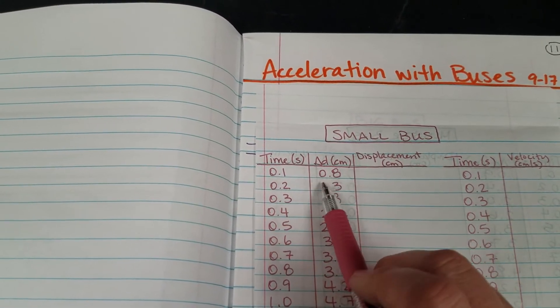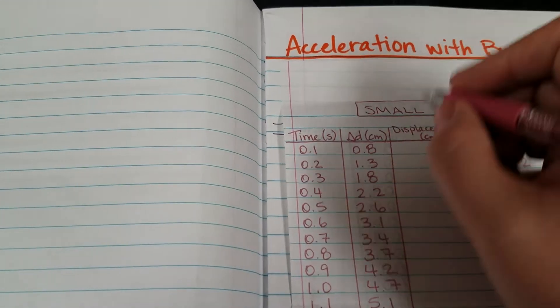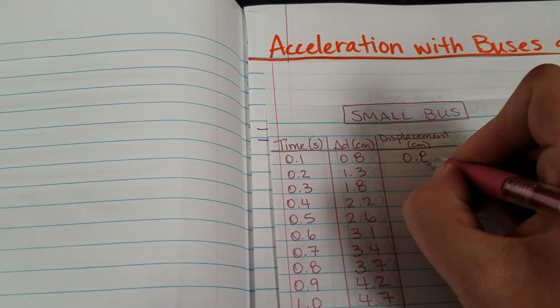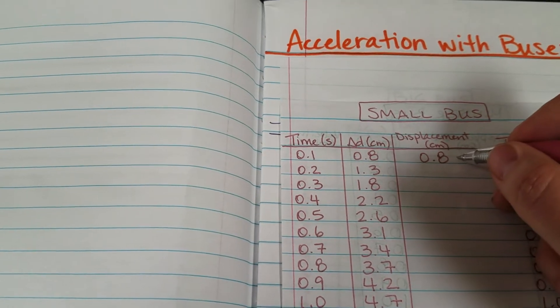So my first one 0.8 centimeters and I'm going to add that to zero. So my total moved or my total displacement at this point is 0.8 centimeters.